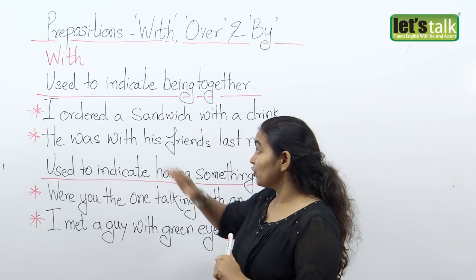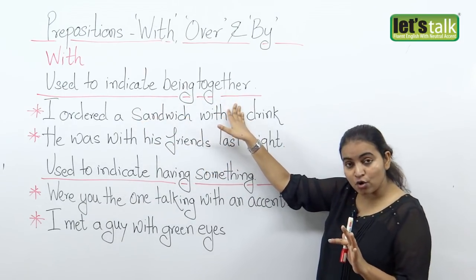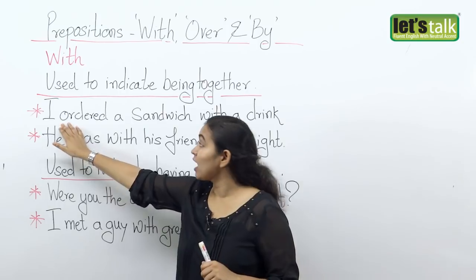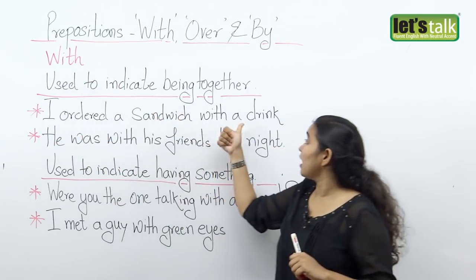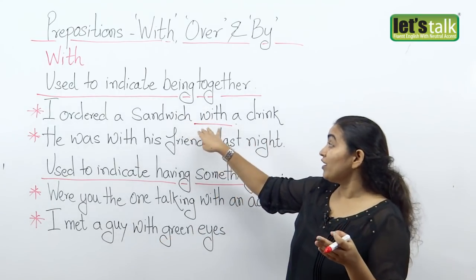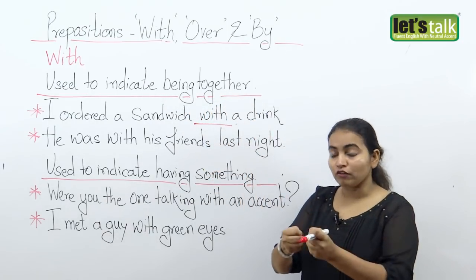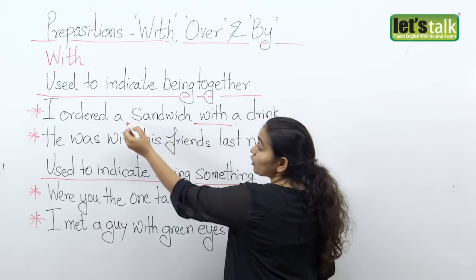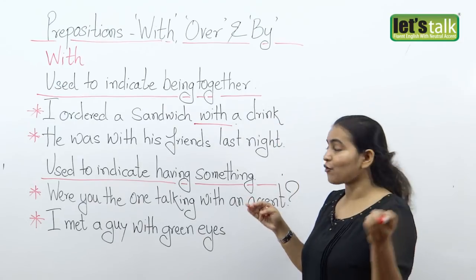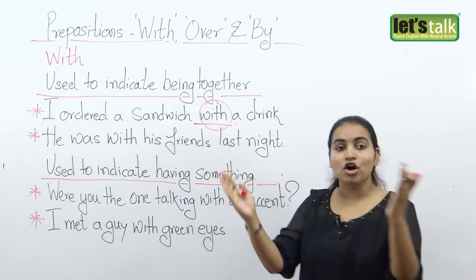The first way I can use the preposition 'with' is when I want to indicate being together or being involved. So let's look at the first sentence: 'I ordered a sandwich with a drink.' We use 'with' to indicate being together, being in unison. The sandwich came along together with the drink, and therefore I use the word 'with.'